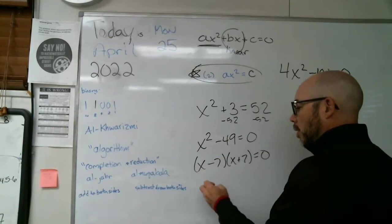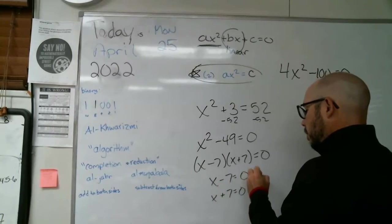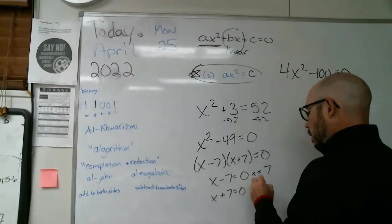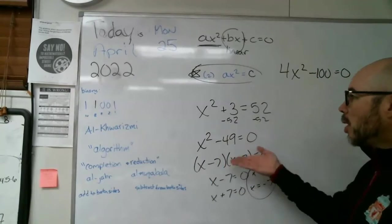So this would break down to x minus seven, x plus seven. And using the zero product property, we could solve this, that x is seven or x is negative seven plus or minus seven. That's one way we can do it.